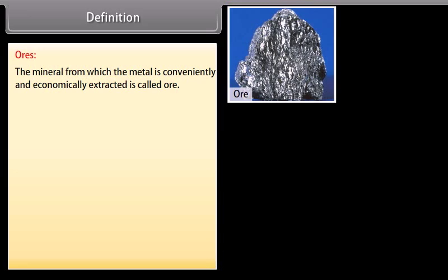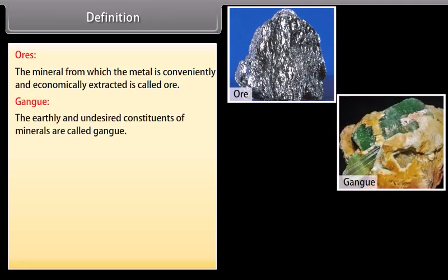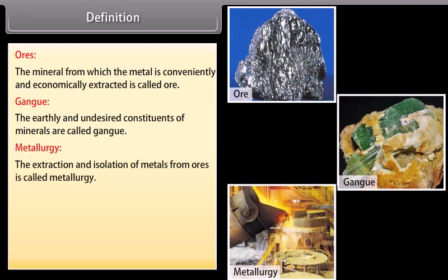Definitions. Ores: The mineral from which the metal is conveniently and economically extracted is called ore. Gang: The earthly and undesired constituents of minerals are called gang. Metallurgy: The extraction and isolation of metals from ores is called metallurgy.